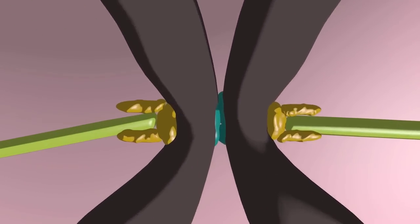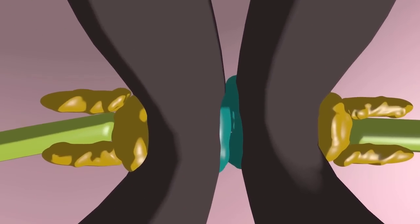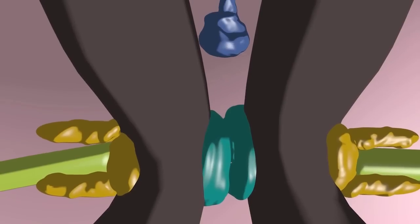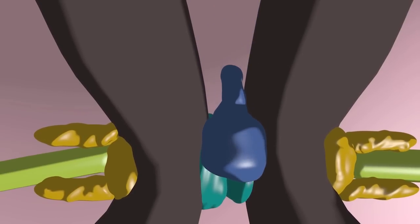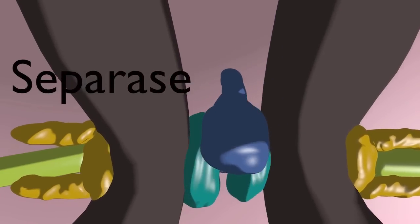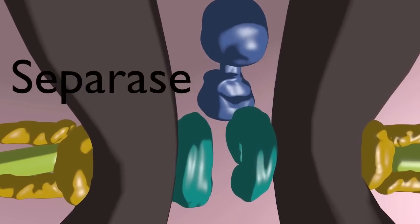This separation happens in anaphase when a key subunit of the cohesin complex that holds the sister chromatids together is cleaved by a protease called separase, leading to the disintegration of sister chromatid cohesion.